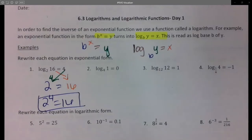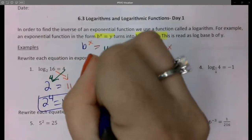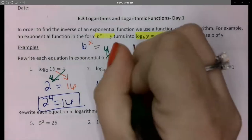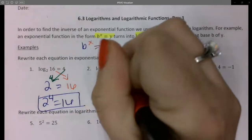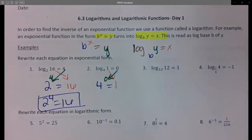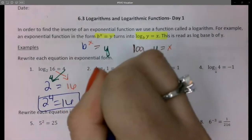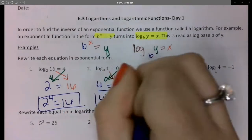Okay, so I want to do the same thing for number 2. I'm going to have a base of 4, and then this is going to become my exponent and the 1 is going to become my answer. My final answer is 4 to the 0 equals 1.